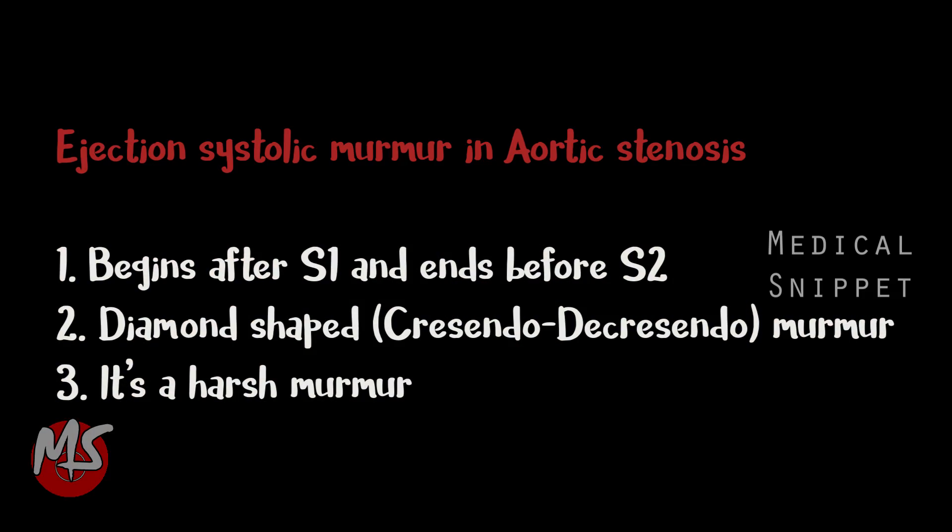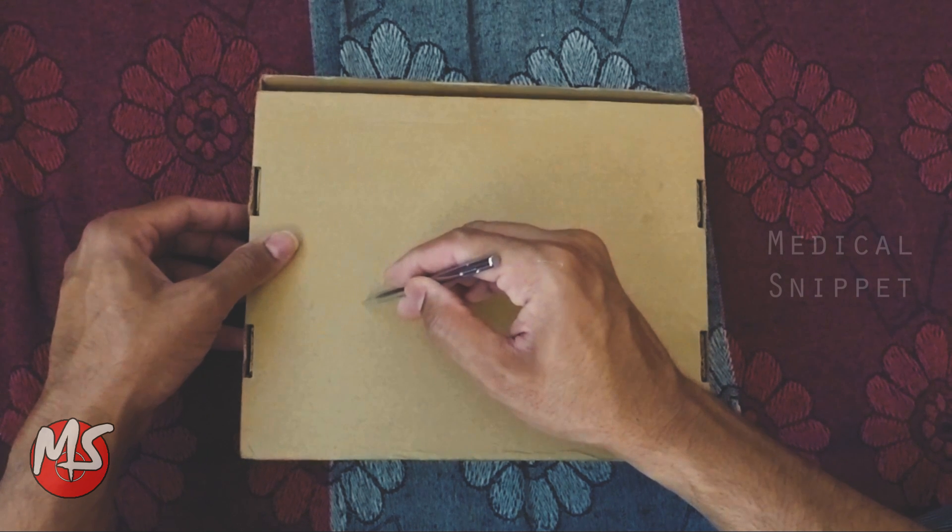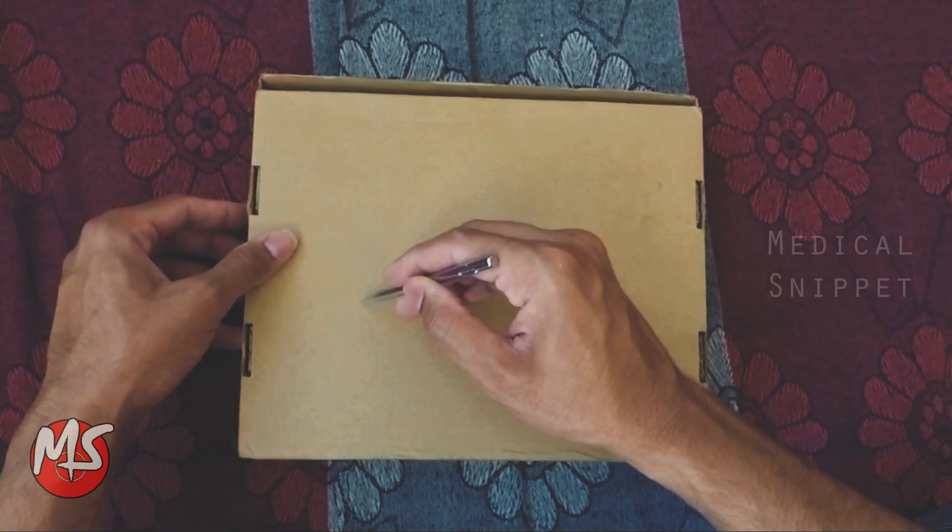Ejection systolic murmur in aortic stenosis. It begins after S1 and ends before S2. It is diamond-shaped — that is, a crescendo-decrescendo murmur — and it is a harsh murmur.